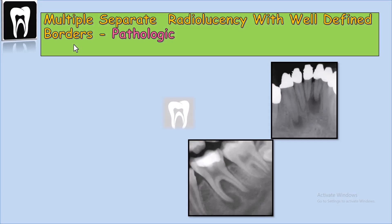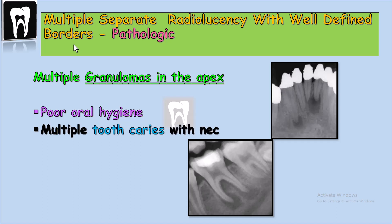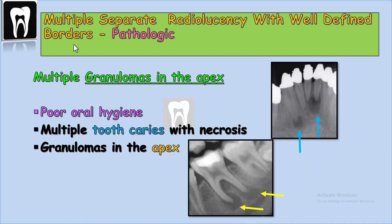Patients who have poor oral hygiene and have multiple tooth caries or multiple retained roots — because of the inflammation, periapical pathology starts. The inflammation can spread around the apex and resorb the apical bone. So we see multiple separate radiolucency in the periapical region with poor oral hygiene, multiple tooth caries and retained roots, leading to the diagnosis of multiple granulomas in the apex.